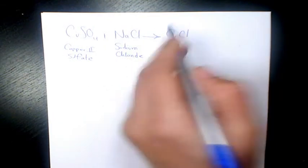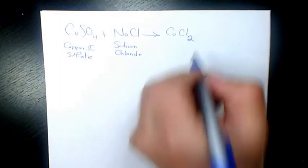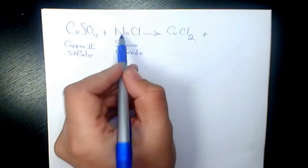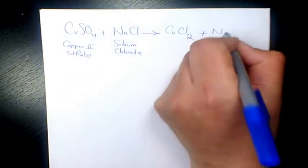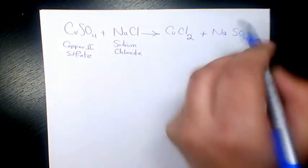For CuCl2, Cu is +2, so we need to write 2 here for chlorine. For Na2SO4, Na is +1 and SO4 is -2, so we need to write 2 for sodium.